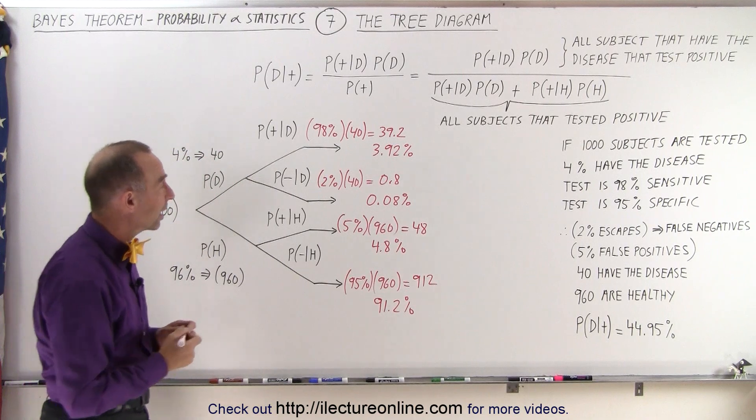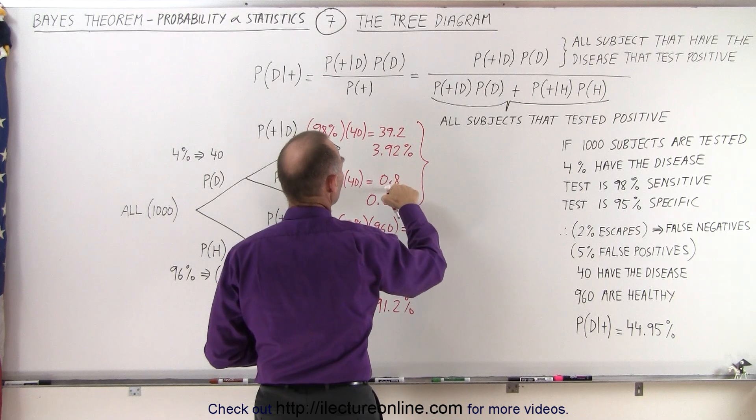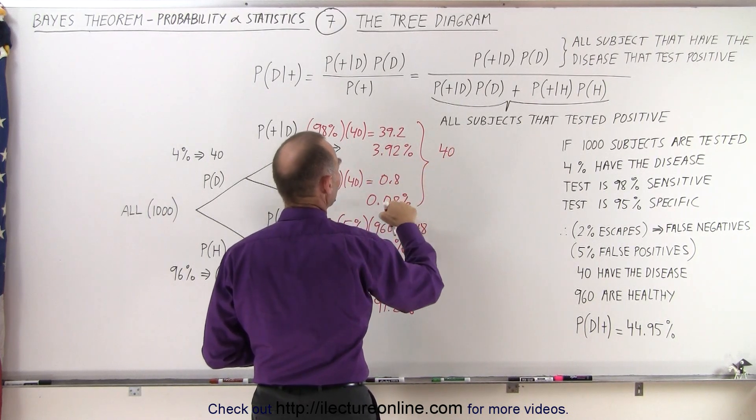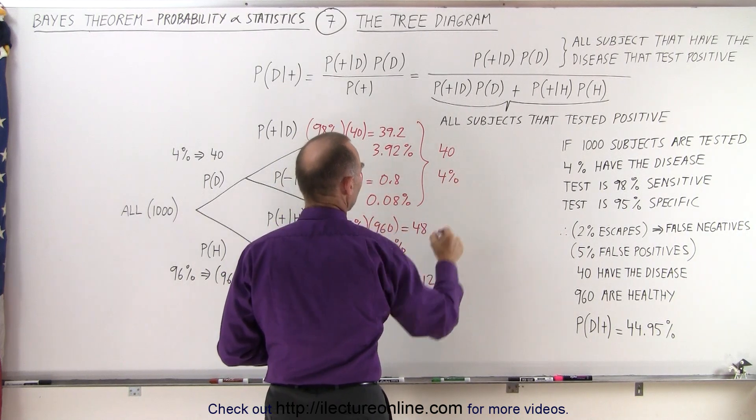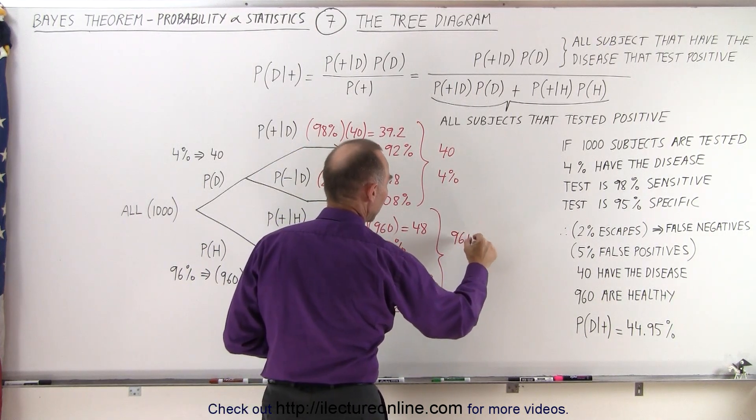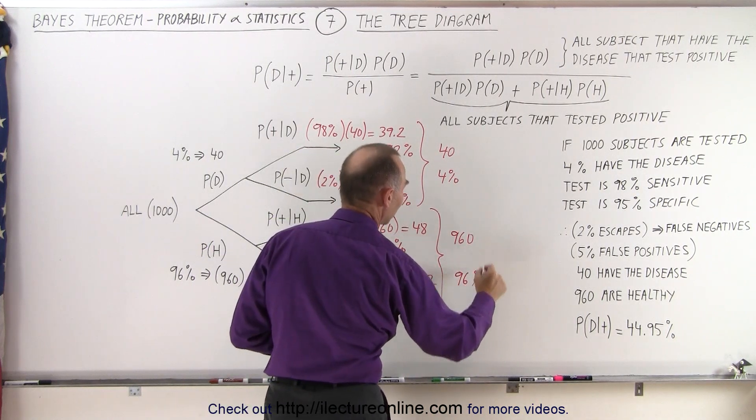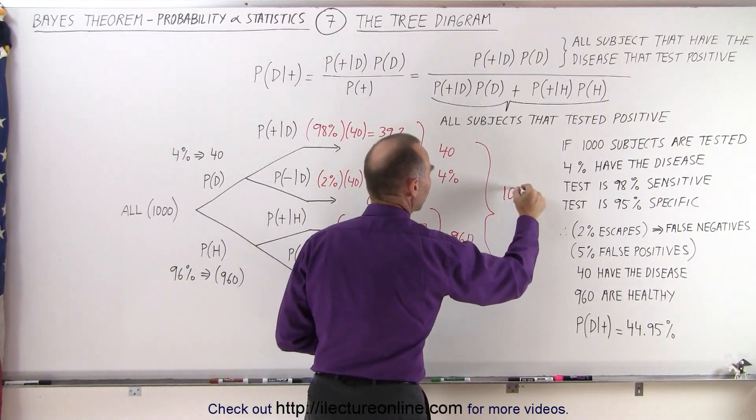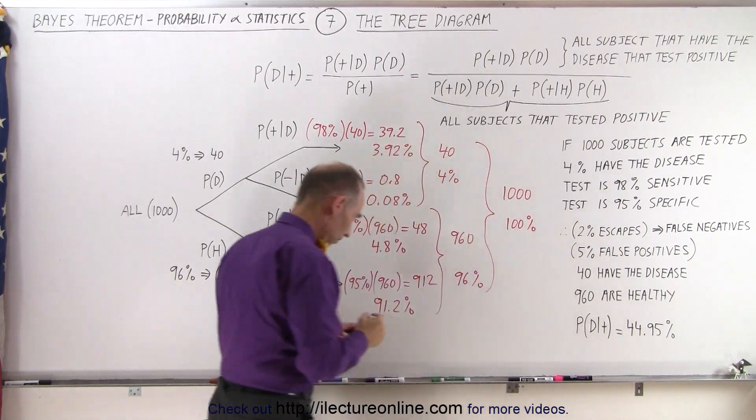Now let's add some of these numbers together. When you add these two together, 39.2 plus 0.8, that gives you 40. And when you add 3.92% plus 0.08%, that gives you 4%. If you add these two numbers together, 48 plus 912 gives you 960. And 4.8% plus 91.2% gives you 96%. And then when you add these two together, that adds up to the total number of subjects of 1,000. And that is 100% of the total.